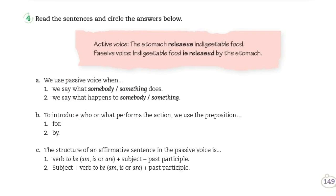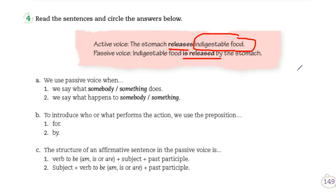Activity number three: read the sentences and circle the answers below. Active voice: 'The stomach releases indigestible food.' Aquí dice: el estómago libera comida que no es digerible. Y en la passive voice tenemos: la comida no digerible es liberada por el estómago. Tenemos entonces que en inglés, y también en español, hay dos tipos de oraciones o de voces — una es la voz activa y la otra la voz pasiva.